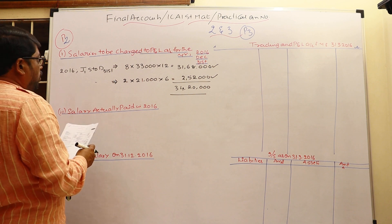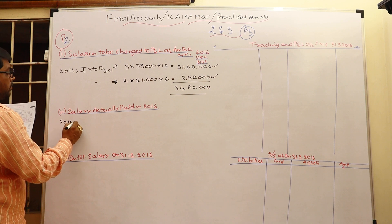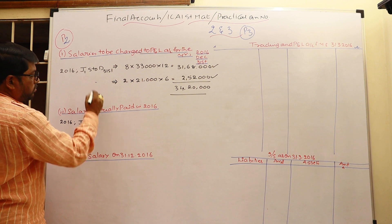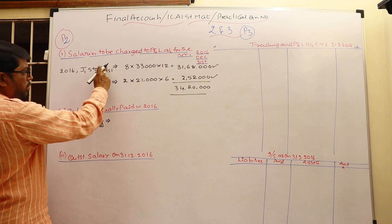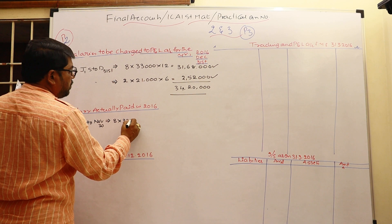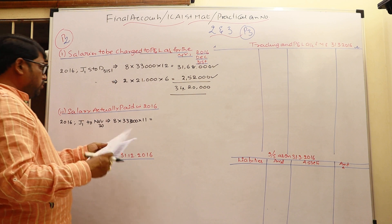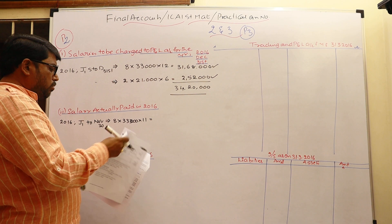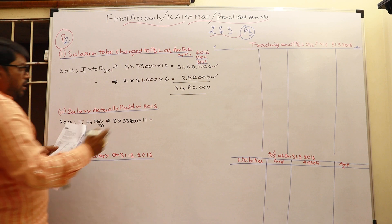Now, how much was actually paid during 2016? For the 8 employees, salary is paid from January through November — only 11 months are paid because December is outstanding. So 8 employees × 11 months × ₹33,000 = ₹29,04,000.